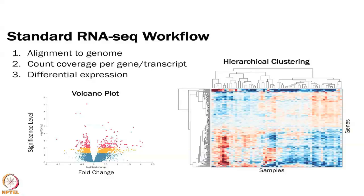The standard RNA-seq workflow: you do your next-gen sequencing, you align it to the genome. The most commonly used aligner for RNA-seq at this point is STAR, so I would very much recommend you use that if you are doing RNA-seq analysis. Then you do coverage — you count coverage per gene or transcript — and then you do differential expression. Some outputs include volcano plots where you look at fold change of different transcripts versus significance level.